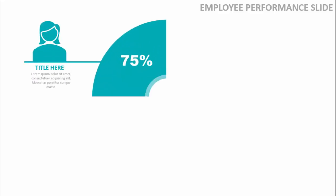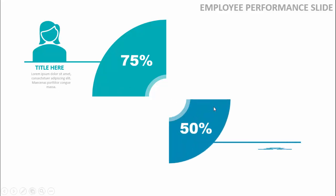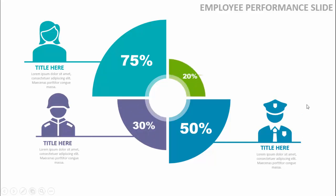In today's tutorial I'm going to show you how to create a multi-purpose infographic slide in PowerPoint. When I click, it will show you the percentage of the employee — you can have the employee performance slide, add the image, add the title and the detailed text. When I click it will show the next employee with 50 percent, then 30 percent and 20 percent respectively.